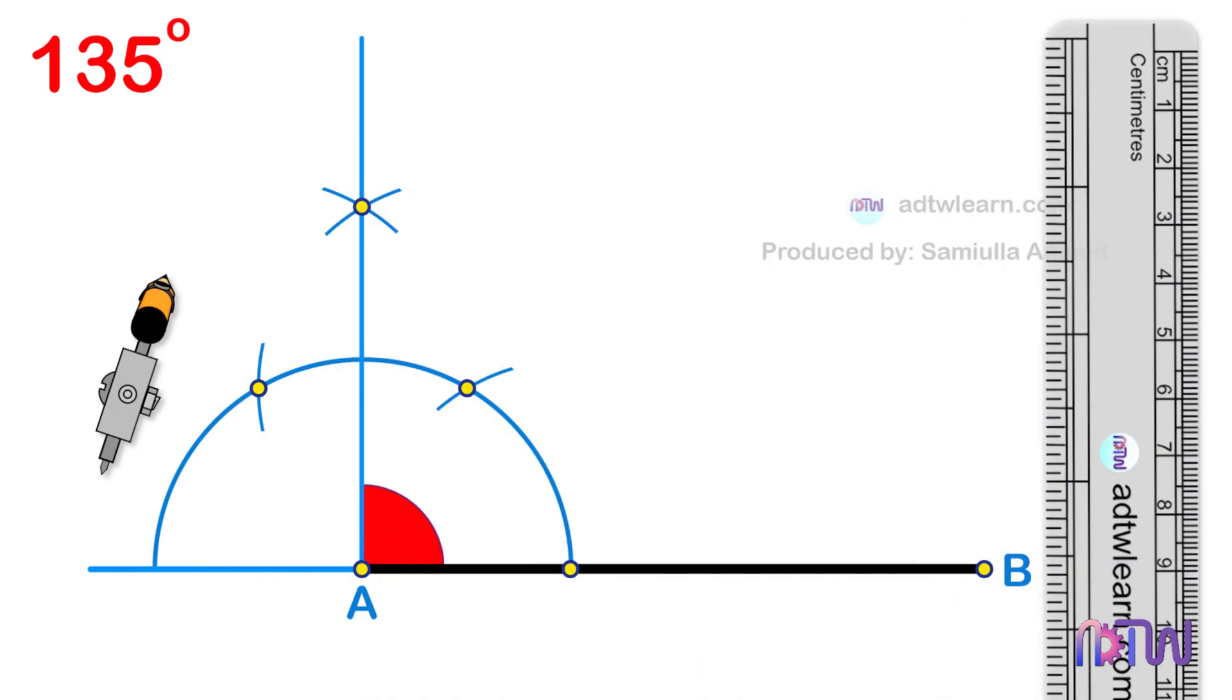The angle made by this line is 90 degrees with the horizontal line. After this, to get a 135 degree angle, we need 45 degrees more from here. The angle from here to here is also 90 degrees. Half of this angle will be 45 degrees.